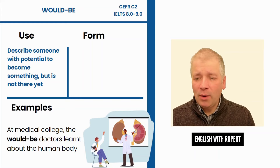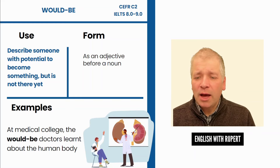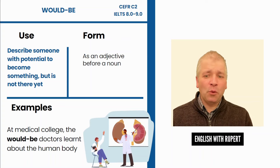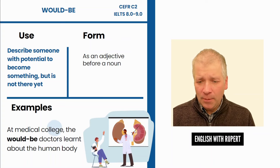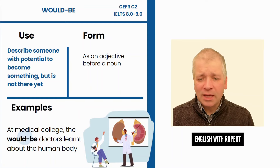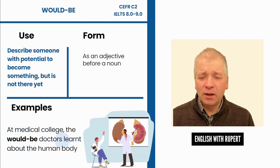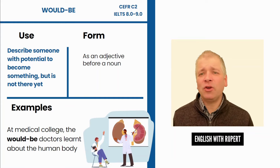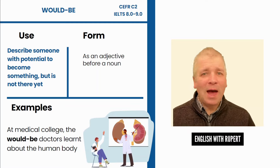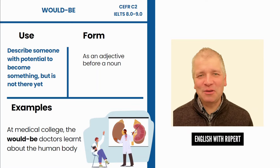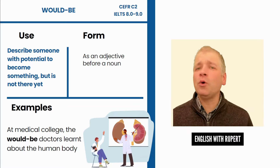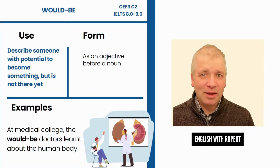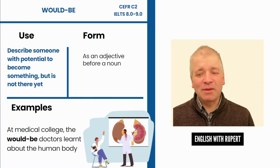How do we use this? We use 'would be' as an adjective before a noun — for example, 'the would-be doctors'. So 'would be' is describing the doctors. Imagine replacing it with 'pretend' or any other adjective: the happy doctors, the sad doctors, the young doctors, the old doctors, the would-be doctors. They're all adjectives, and we use this in the same way.